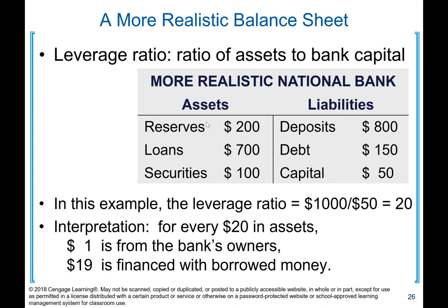A more realistic national bank would have, on the liability side: deposits of $800, debt of $150, and capital of $50. On the asset side: reserves of $200, loans of $700, and securities of $100. In this example, the leverage ratio is $1,000 divided by $50, which equals 20 — total assets over capital. So the leverage ratio for this bank is 20.